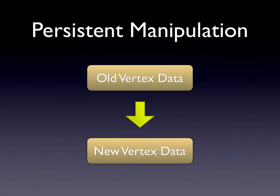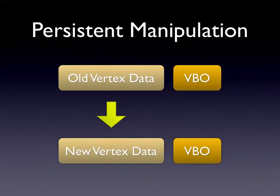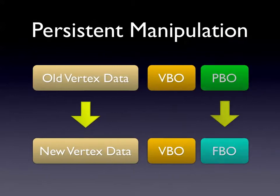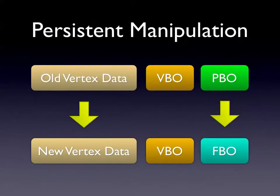What we basically want to do in order to have persistent manipulation — manipulation that actually stays on the GPU between flush calls — is be able to have old vertex data on the GPU and then update new vertex data. We want to actually update the vertices themselves on the GPU and have that persist. So what we need is a way to be able to get from a vertex buffer object to another vertex buffer object or transfer data between them. We're going to talk about pixel buffer objects and frame buffer objects.